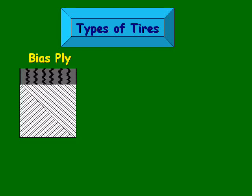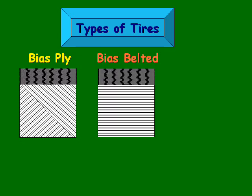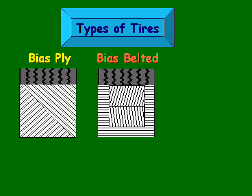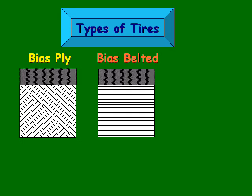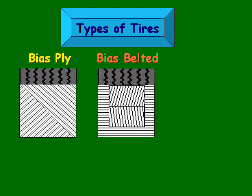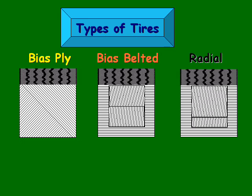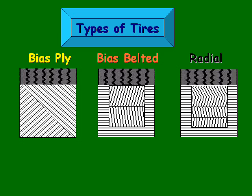To start off, there is bias ply, which has diagonal body ply cords that essentially criss-cross each other. Next, there's the bias belted, which has two or more bias plies or stabilizer belts that are bonded directly beneath the tread. And the third main type of automotive tire is the radial tire, which has even more body ply cords on it.